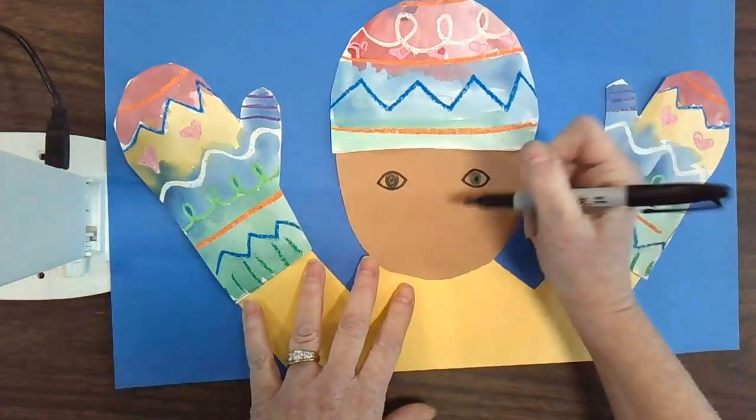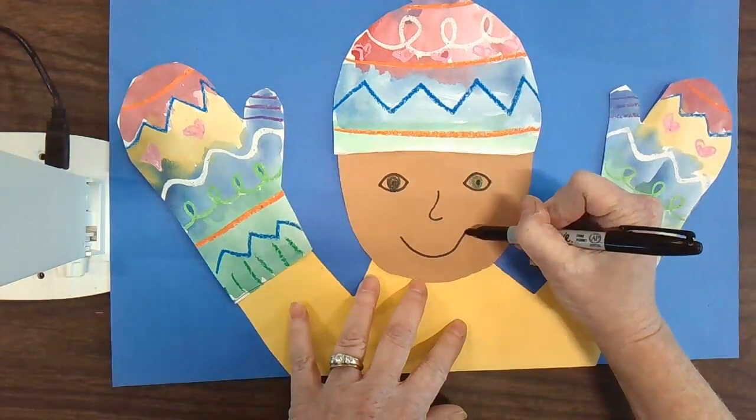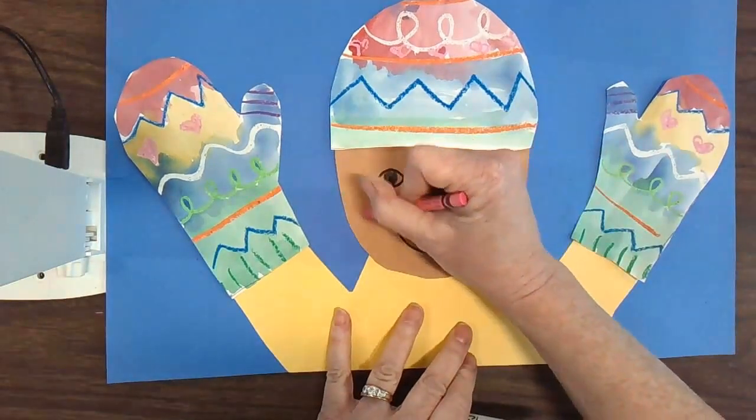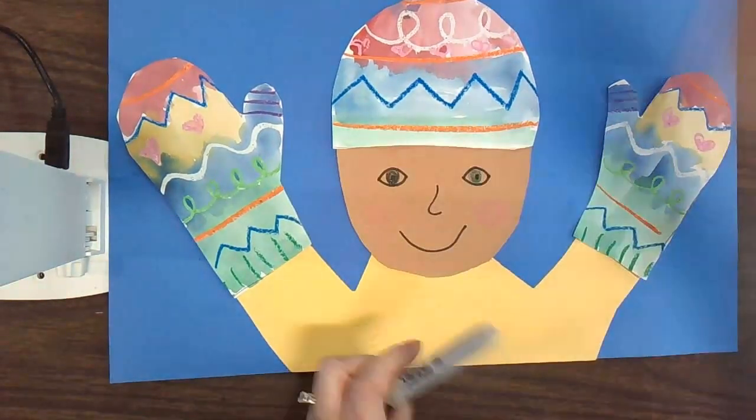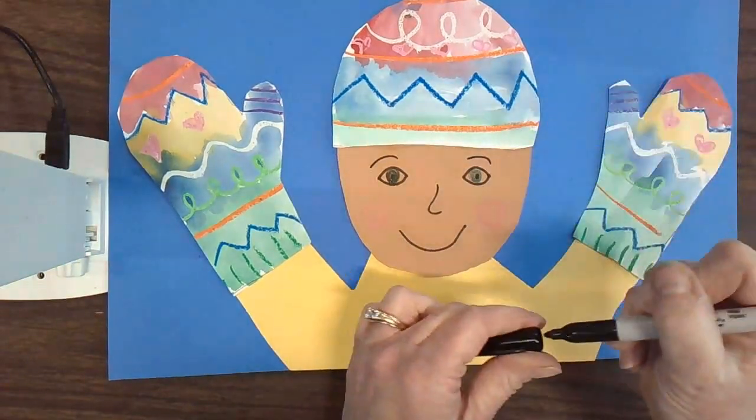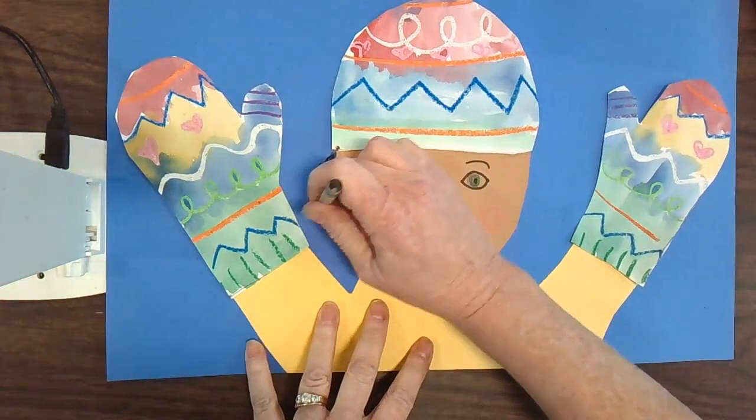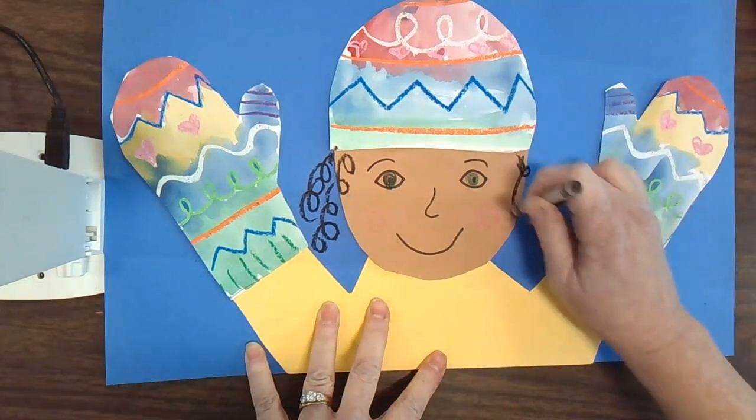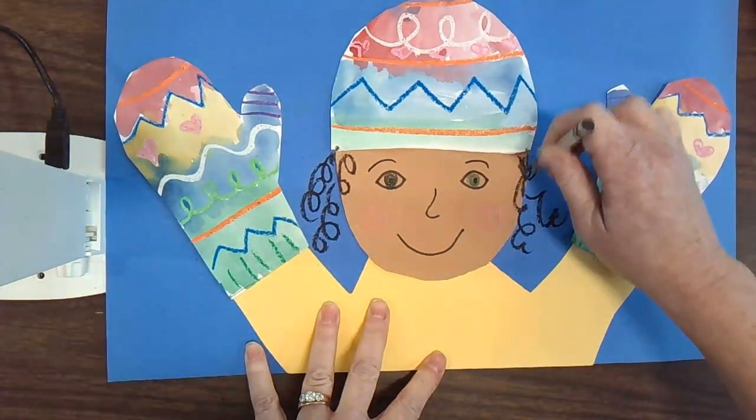You can make a nose any way that you want. You can make a mouth smiling. I like to make little rosy cheeks because I'm outside playing in the cold. You could add eyebrows or eyelashes to your person, and then you want a little bit of hair peeking out from under your hat.